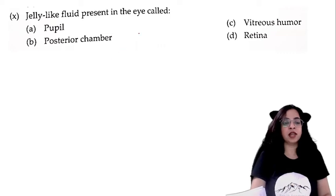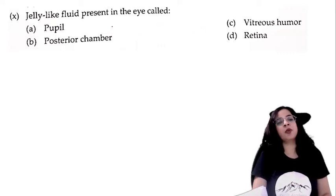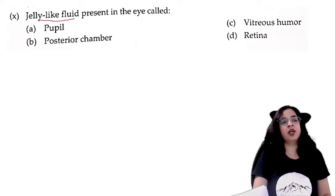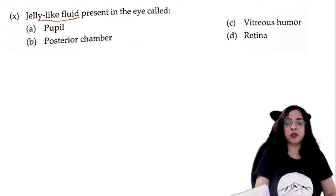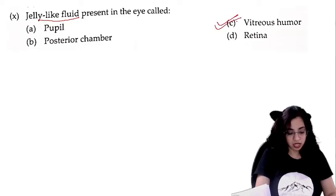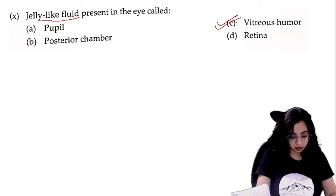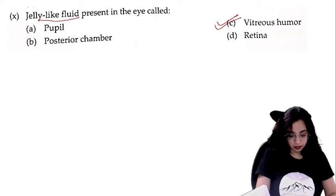The jelly-like fluid present in the eye is called: pupil cannot be a fluid, retina cannot be a fluid, so it has to be vitreous humor.